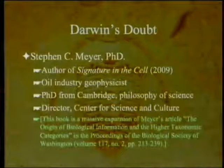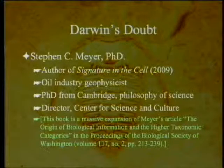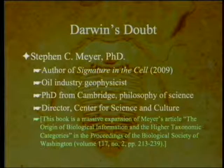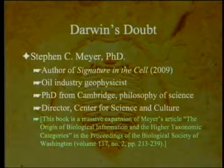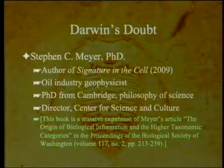This book is, in fact, a massive expansion of Meyer's article, 'The Origin of Biological Information and the Higher Taxonomic Categories,' published in the Proceedings of the Biological Society of Washington — a work which was retracted in spite of no real reason for it, and the editor was then subject to an attempted purge and finally found employment elsewhere.